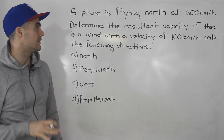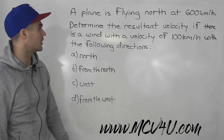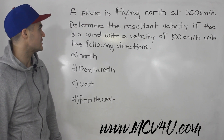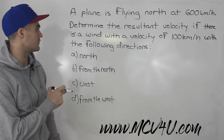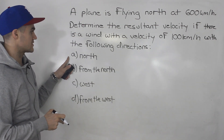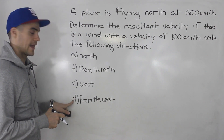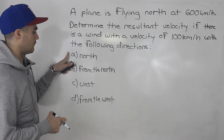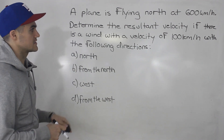What's up everybody, welcome back. In this question, a plane is flying north at 600 kilometers per hour. Determine the resultant velocity if there is a wind with a velocity of 100 kilometers per hour with the following directions: if the wind is going north, if it's coming from the north, if it's going west, and if it's coming from the west. So we've got four different resultant velocities to calculate.